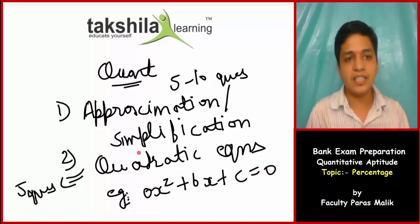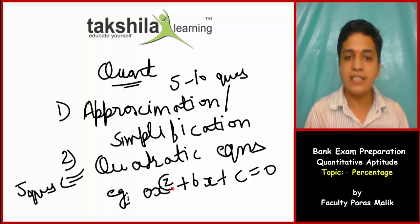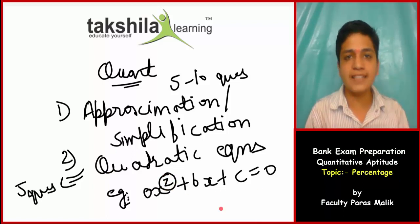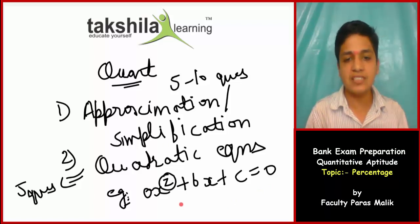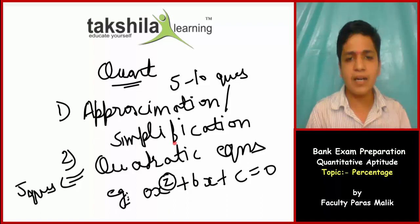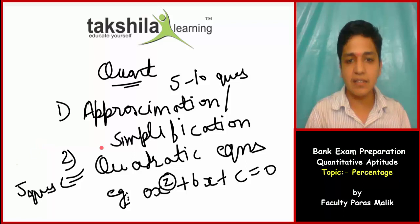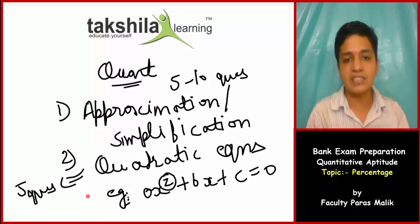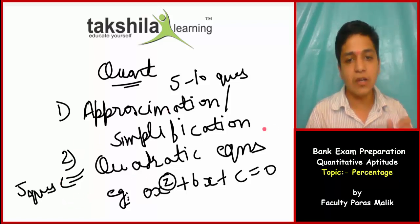This is our quadratic equation. The maximum power, i.e., the degree, is 2. The form is Ax squared plus Bx plus C equals 0. Such equations are called quadratic equations. In this case, you will compare the roots to determine which root is bigger and which is smaller. You can expect 5 questions from quadratic equations.